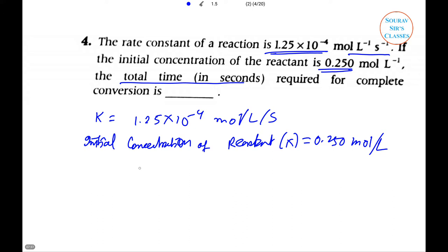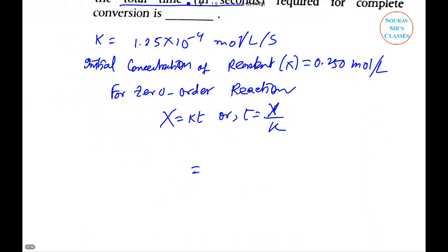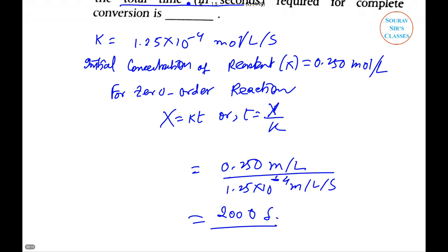For a zero-order reaction, x equals kt, or t equals x/k. Substituting the values: 0.250 mol/L divided by 1.25 × 10^-4 mol/L/s. After calculating, we get 2000 seconds. So the time required to complete the conversion is 2000 seconds.